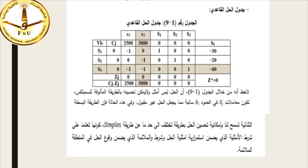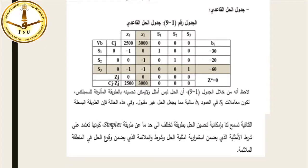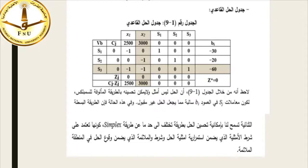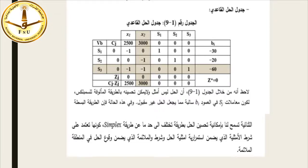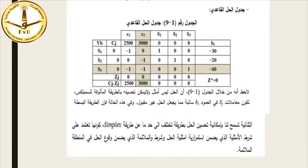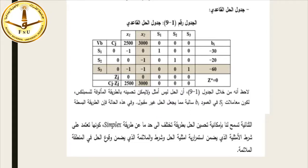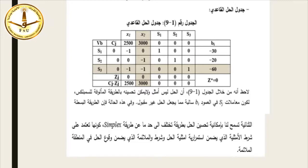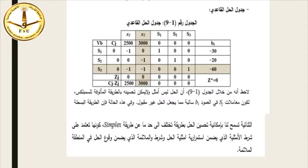من خلال جدول الحل القاعدي الأول نلاحظ أن الحل ليس أمثل ولا يمكن تحسينه بالطريقة المعتادة (السيمبليكس) لكون معاملات Sj في العمود Bi سالبة مما يجعل الحل غير مقبول. وفي هذه الحالة فإن الطريقة الثنائية تسمح بإمكانية تحسين الحل بطريقة تختلف عن طريقة السيمبليكس، كونها تعتمد على شرط الأمثالية وشرط الملاءمة.